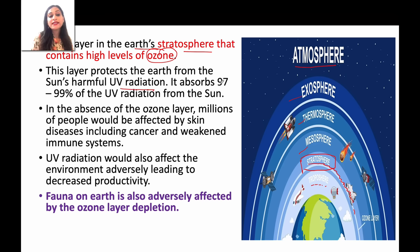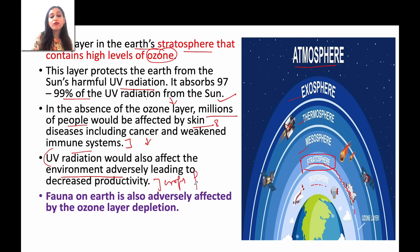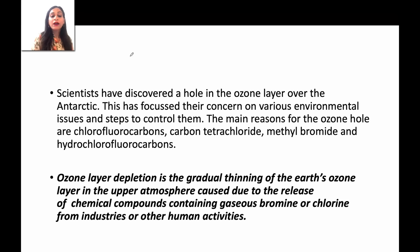UV radiation — the ozone absorbs 97 to 99% of UV radiation from the sun. If ozone does not do this, millions of people could develop skin diseases, cancer, and the immune system can become weak. UV radiation also affects our environment, the productivity of your crops, food, plant life, and fauna.